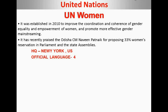The headquarter is in New York, USA, and the official language is spoken in four official languages. In India, in 2018, Naveen Patnayak proposed that 33% of women will be reserved in Parliament and State Assembly. This is why they have been supported by UN Women.